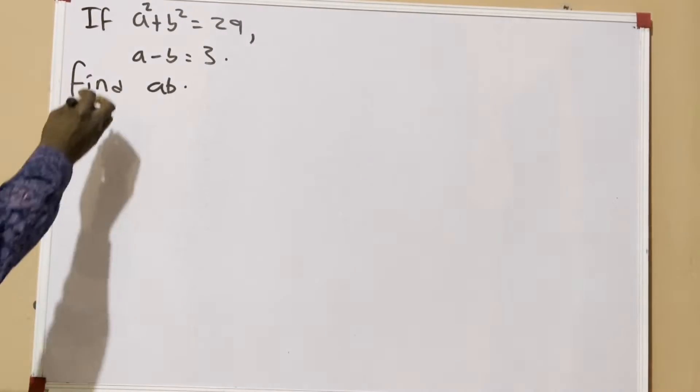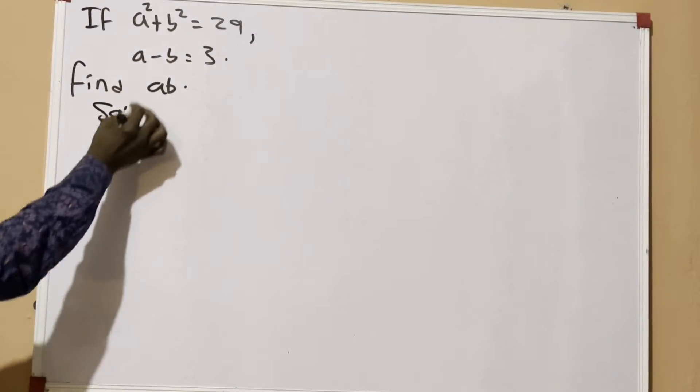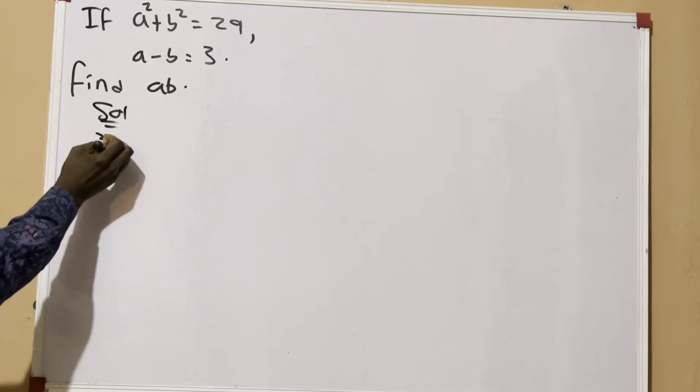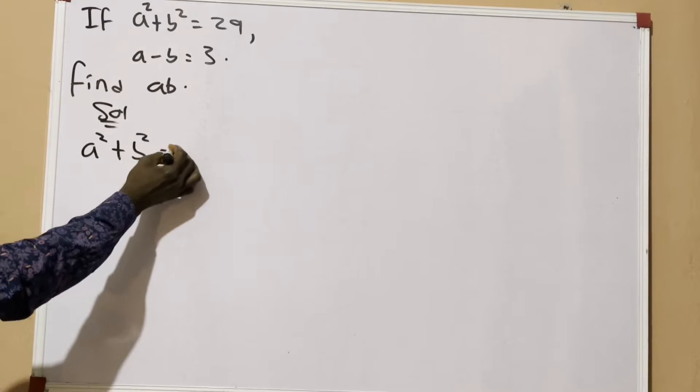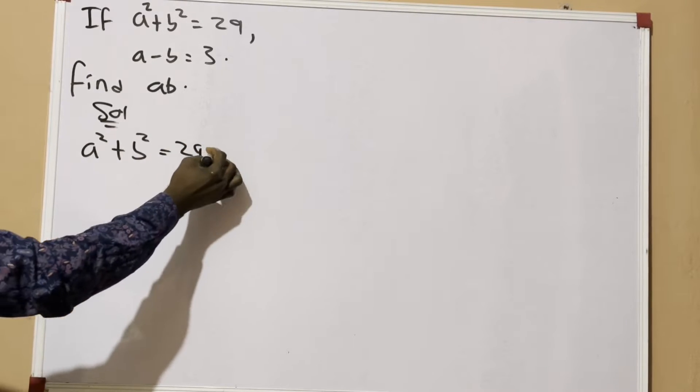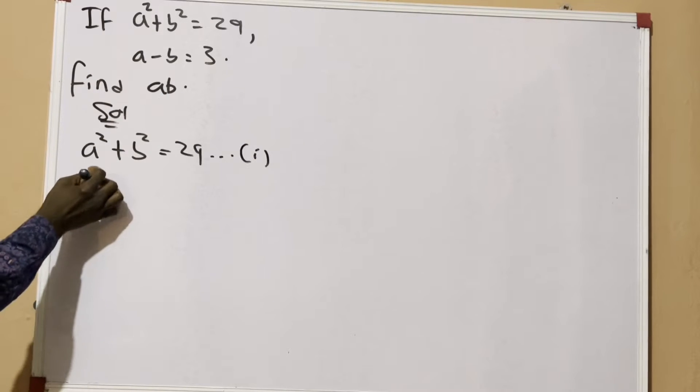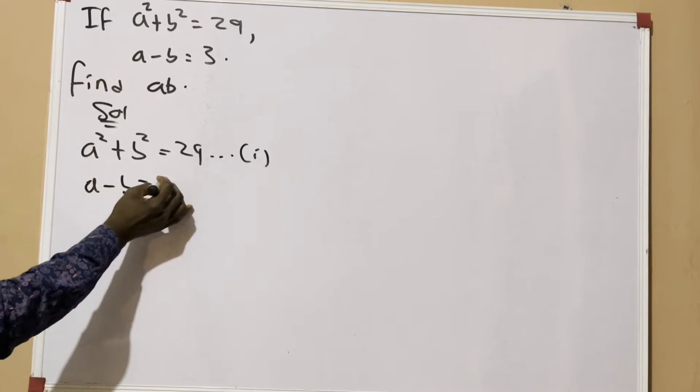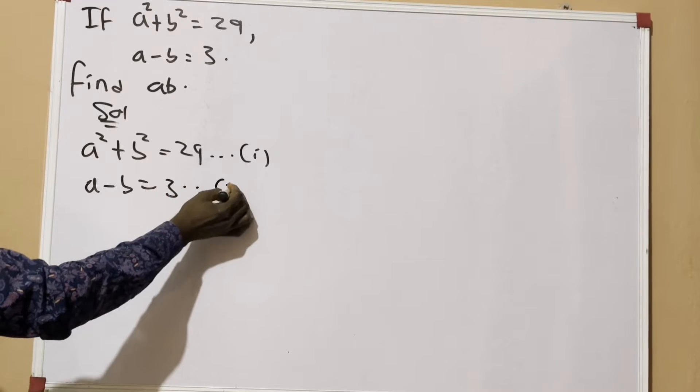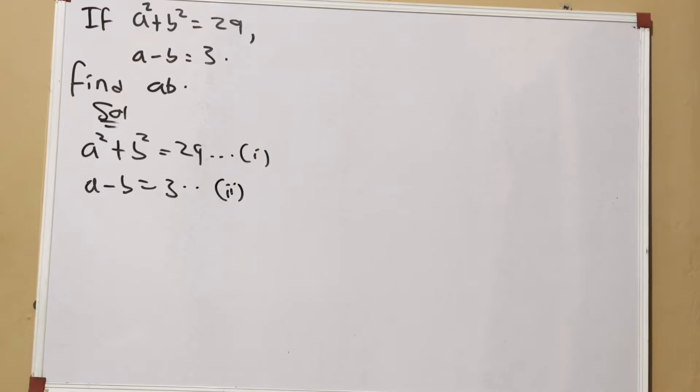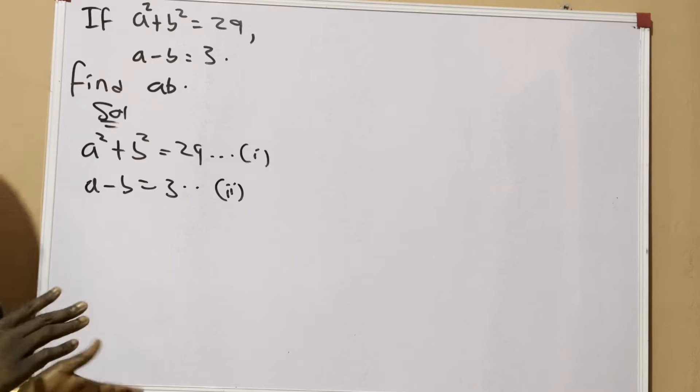Let us say a² + b² = 29 is equation 1, and a - b = 3 is equation 2. Now for equation 2, let us square both sides of the equation.